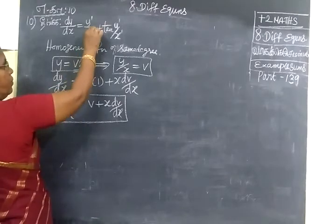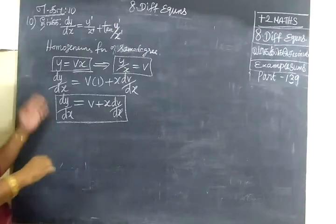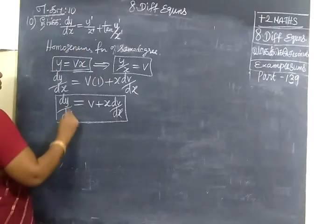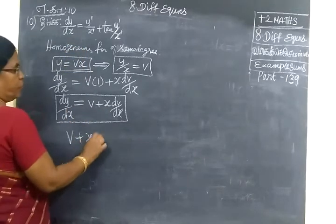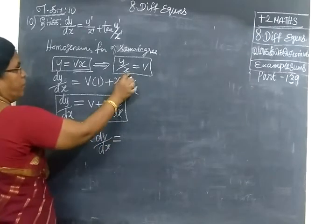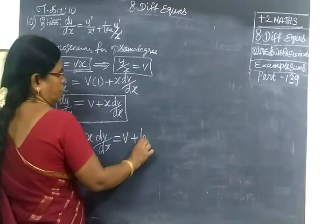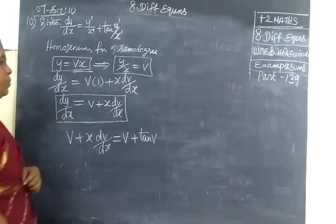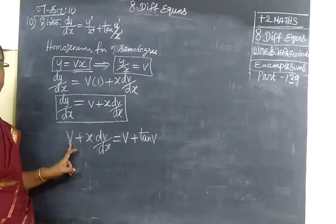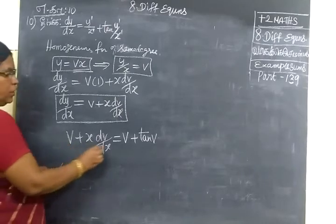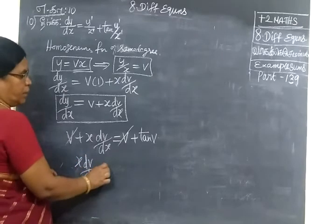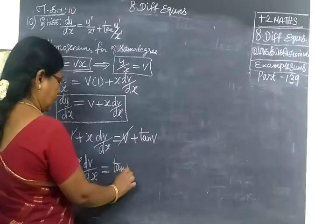This implies y/x equal to v. Then dy/dx equal to v plus x into dv/dx. If you write that, this is the standard, provided degree 1s will have same power. Now you substitute here. dy/dx, v plus x into dv/dx equal to y/x,